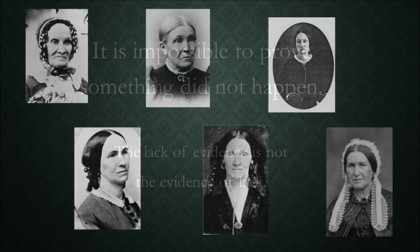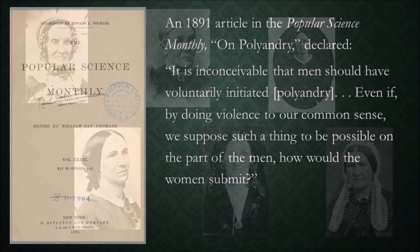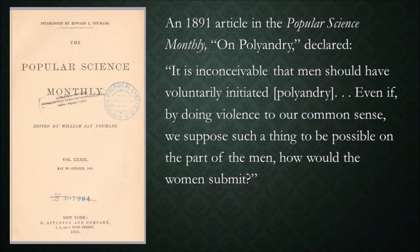Polyandry would have been foreign to the women involved, who were devout Christians and who would have had no context for the practice or how it might have been morally acceptable. No biblical examples were available like in the case of a plurality of wives. An 1891 article in the Popular Science Monthly on polyandry declared, it is inconceivable that men should have voluntarily initiated polyandry — even if, by doing violence to our common sense, we suppose such a thing to be possible on the part of the men, how would the women submit? This was not directed towards Joseph Smith, nor was he mentioned in the article, but the quandary would have been the same.